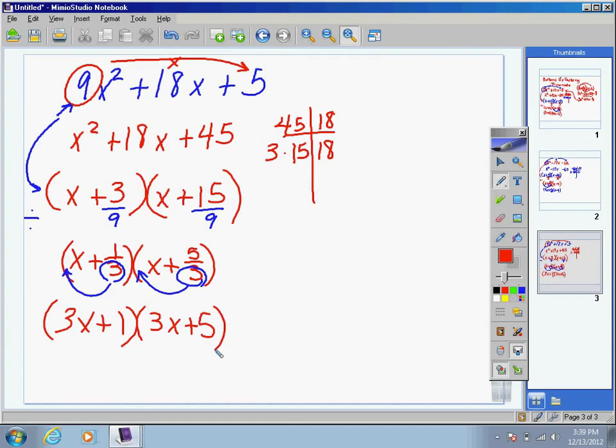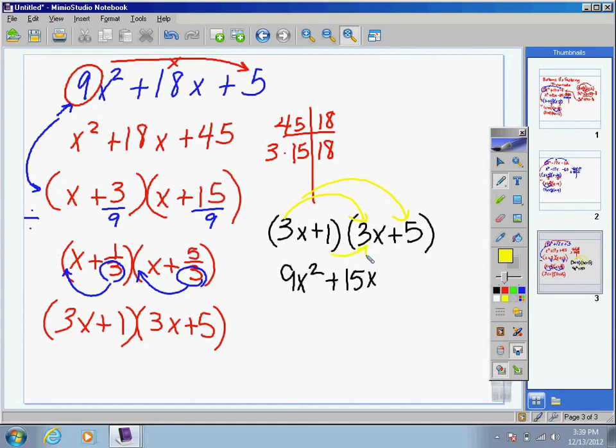Please take some time now to use the FOIL method to check your factors. Remember, first: 9x squared. Outer: plus 15x. Inner: plus 3x. And last: plus 5.